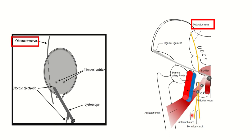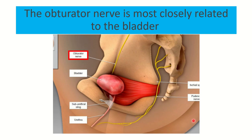In the third picture, we can see the urinary bladder, and the nerve very close to it is also the obturator nerve. A clear line shows that the obturator nerve is most closely related to the urinary bladder. So during diathermy, the diathermy impulse may reach and impair the obturator nerve.